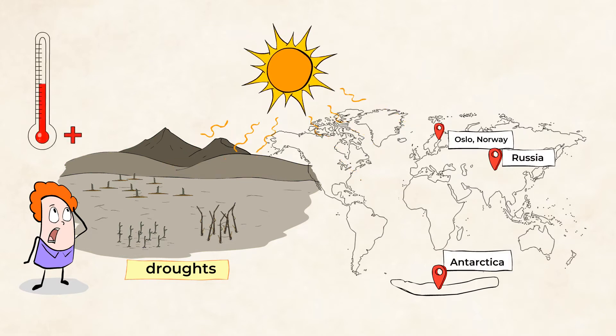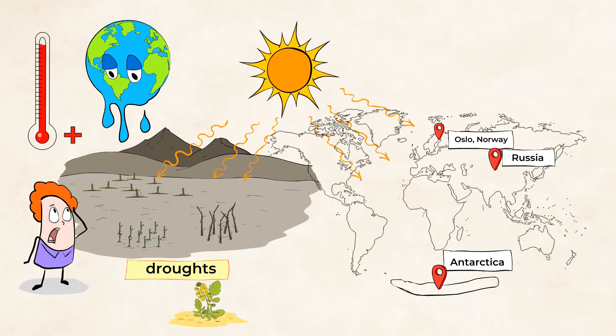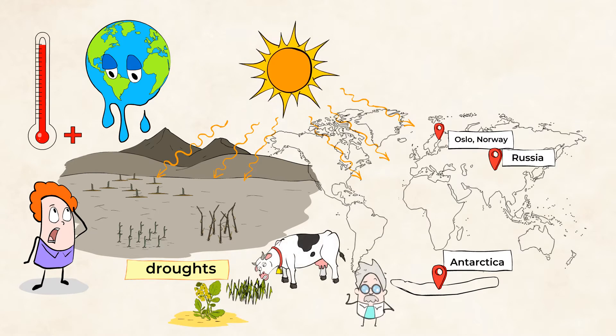When the whole planet's temperature changes by just a single degree or two, that can affect the entire Earth. And I don't just mean the planet. I also mean all of the life on it, including plants, animals, and humans.